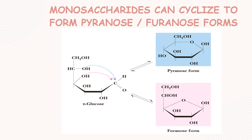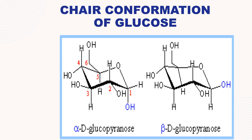This is D-glucose. It can be cyclized to form the pyranose form like this, and also it can be cyclized to form the furanose form like this. These are the images of the chair conformation of glucose — this is alpha D-glucopyranose and beta D-glucopyranose.